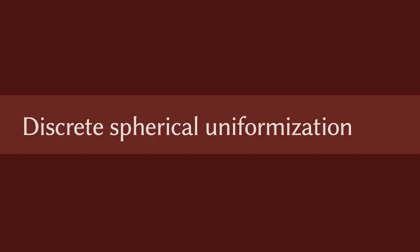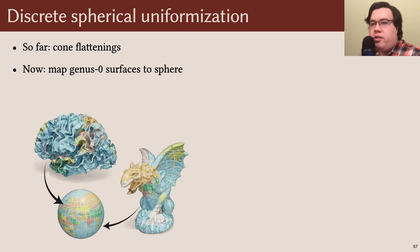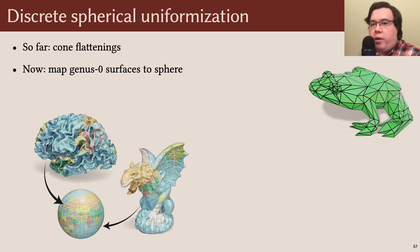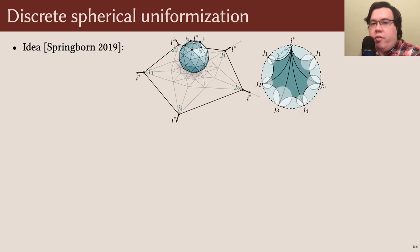Now I'll briefly discuss our fourth and final contribution, a full algorithm for spherical uniformization. So far I've been discussing cone flattenings, but we can also apply all this machinery to map genus 0 surfaces to the sphere. More explicitly, given any genus 0 triangle mesh, we compute a discreetly conformally equivalent polyhedron which is convex and inscribed in the unit sphere. The main idea, given by Springborn in 2019, is as follows.